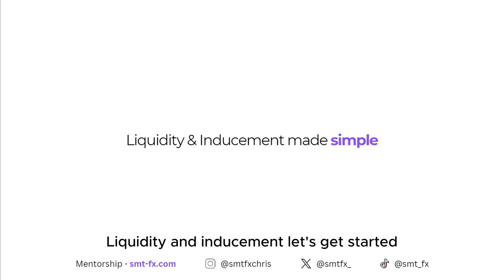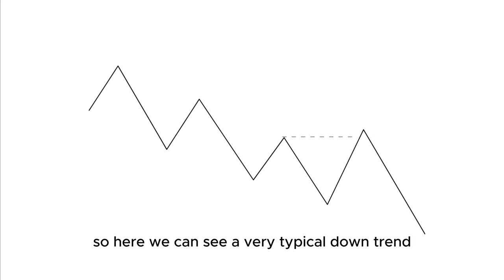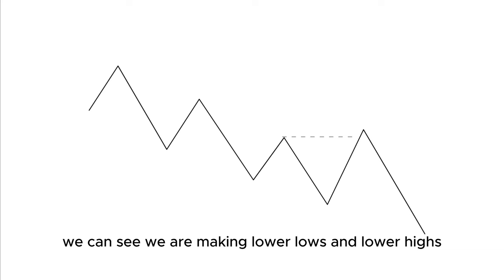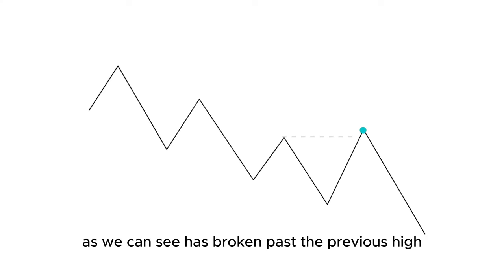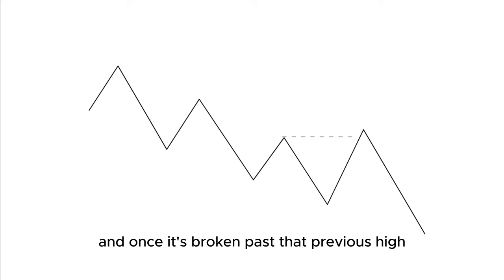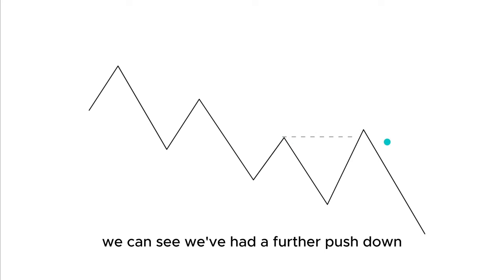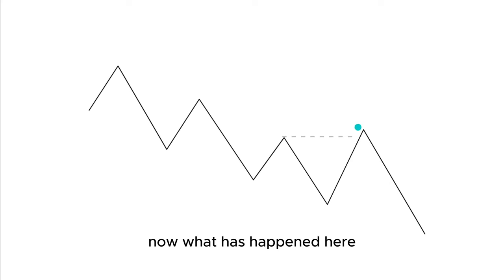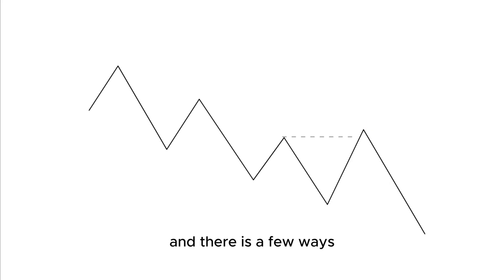Liquidity and inducement — let's get started. Here we can see a very typical downtrend; we are making lower lows and lower highs. The most recent high has broken past the previous high, and once it's broken past that previous high, we can see there's been a further push down. This is quite simply a liquidity grab, and there are a few ways we can spot a potential liquidity grab before they happen.